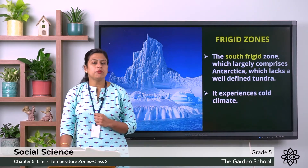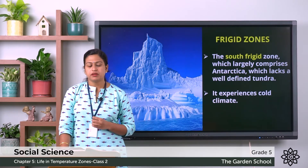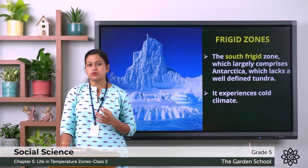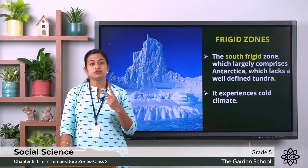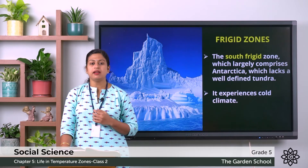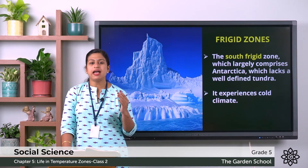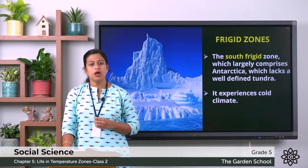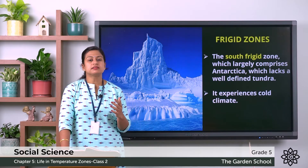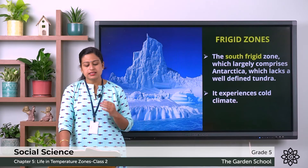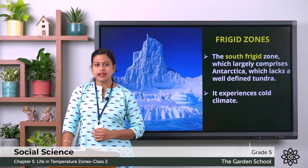Now let us talk about the climatic features of the frigid zones. The frigid zones experience very cold climate and have two seasons — summer and winter — in which summers are short and winters are long and cold. The polar regions experience six months of continuous daytime and six months of continuous night.